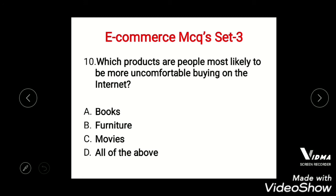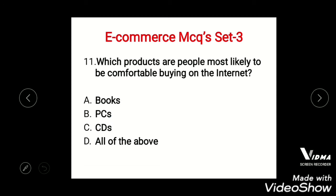Question 10: Which products are people most likely to be more uncomfortable buying on the internet? Options: A) Books, B) Furniture, C) Movies, D) All of the above. The right answer is all of the above.